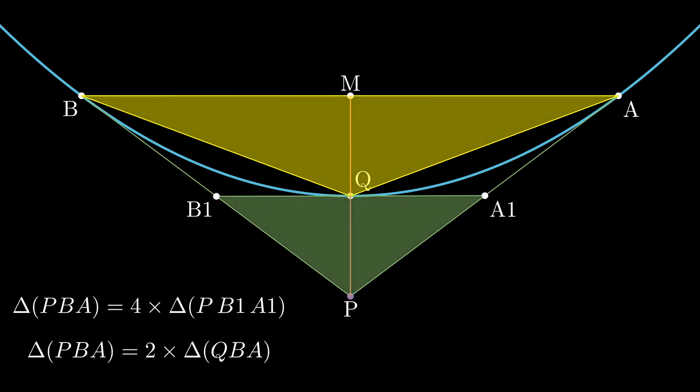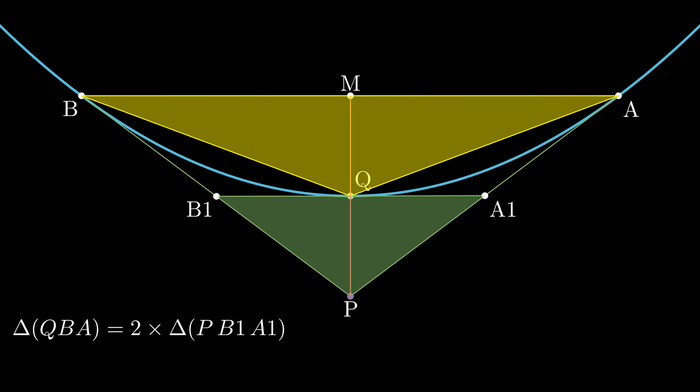And from these two equations, it can be concluded that the area of triangle QBA is twice the area of the triangle PB1A1.